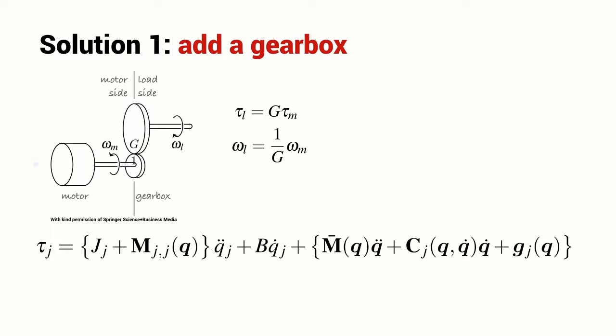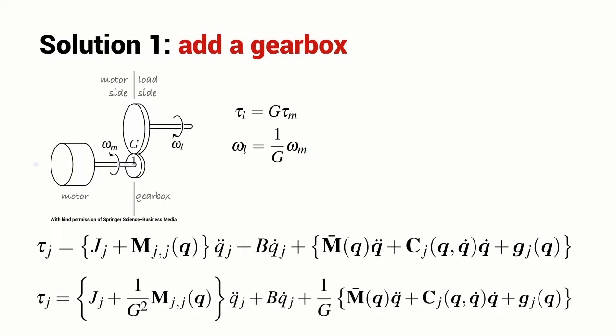If we now address the expression that we had from the previous slide and introduce the gearbox, we see the expression now looks something like this. We can see that the effect of this variable inertia, the inertia that's a function of Q, has now been reduced by a factor of G squared. If I consider the case where I've got a reduction gearbox where G is equal to 50, this is a reduction by 2,500. It's a very, very significant reduction in this configuration dependent inertia.